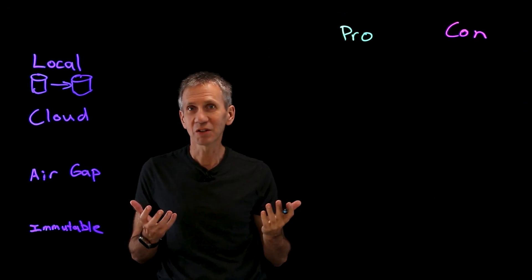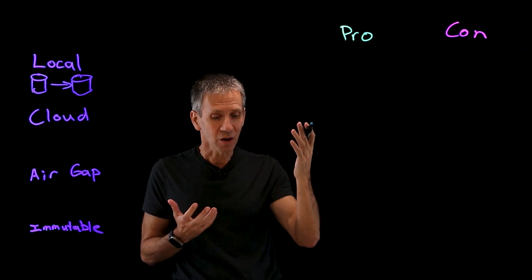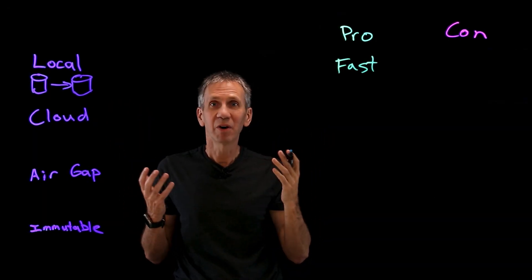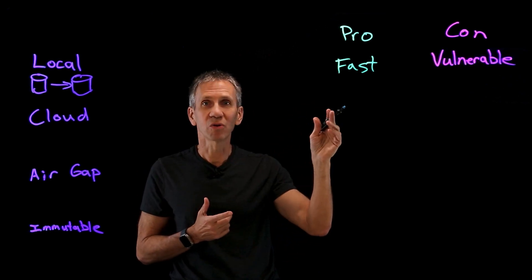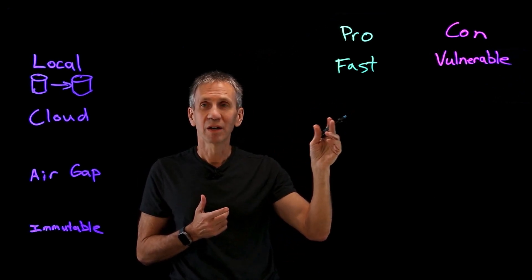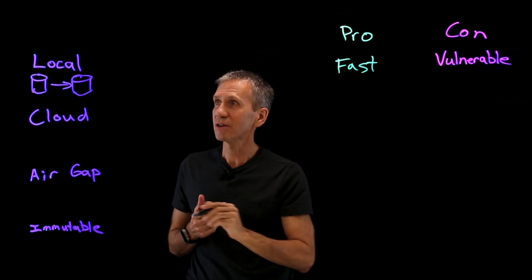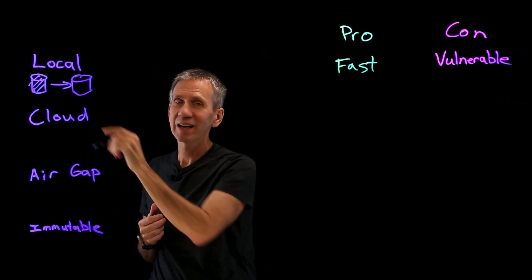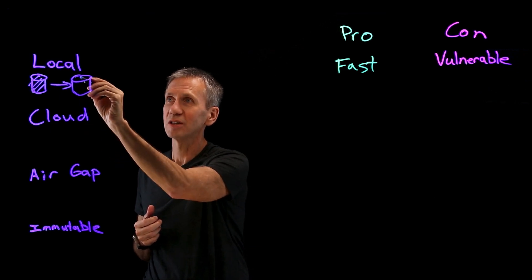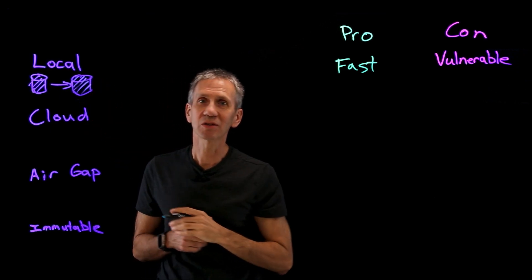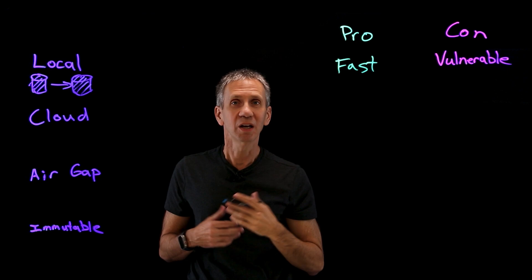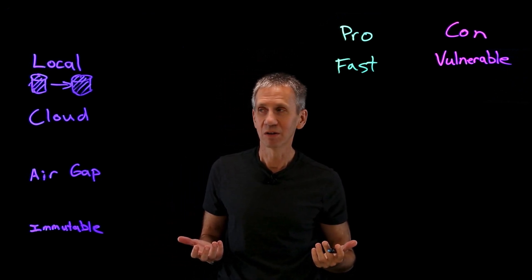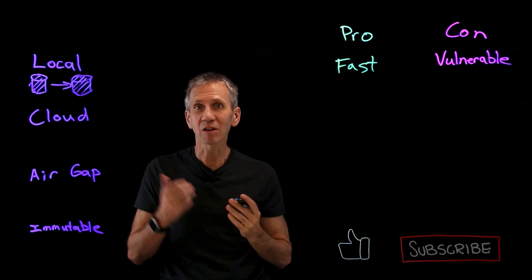There are advantages and disadvantages to this. The pros are it's pretty fast because it's a local attachment. But the downside is it's vulnerable to ransomware. If an attacker comes along and encrypts the main source, and they have access to that — because it's locally attached — they probably have access to the backup as well. And if your backup is encrypted, it's not going to do you any good at all.